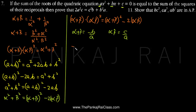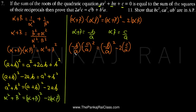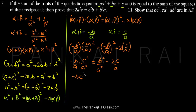So we will get alpha plus beta which is minus b by a, multiplied by alpha beta whole square which is c by a whole square, is equal to alpha plus beta whole square which is minus b by a whole square, minus 2 times alpha beta which is c by a. Let us solve this: minus b by a into c square upon a square gives minus bc² upon a³, equal to b² upon a² minus 2c by a.